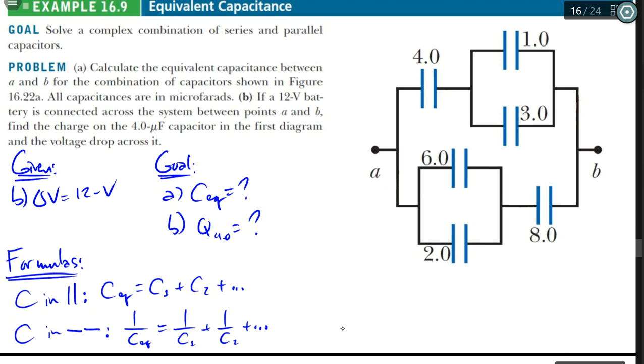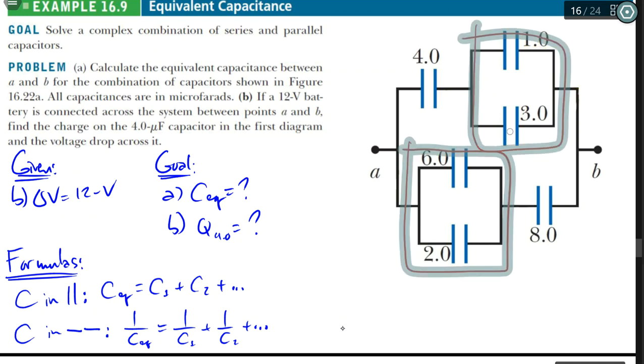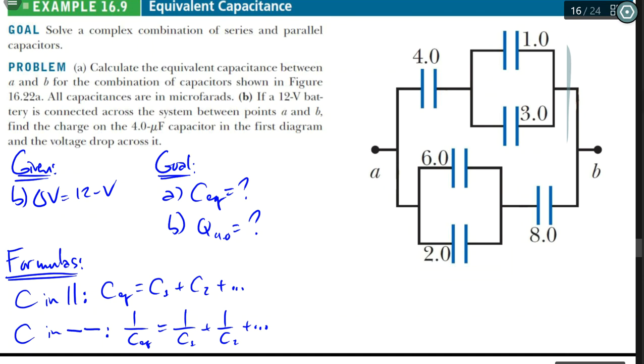So let's start with the easier one. I'm going to try to use a different color each time. For this and this, all you have to do, since it's in parallel, the current splits up here, from there, here, again, and then actually comes back here. Splits up here and then comes back there, and actually comes back here again. So for these two, all you have to do is just add the capacitance, and all these are in units of microfarads.